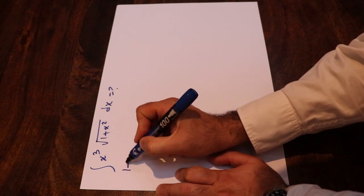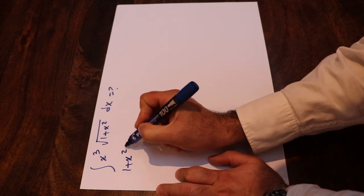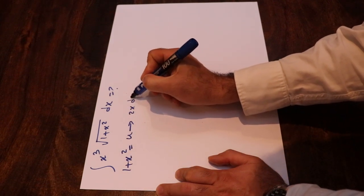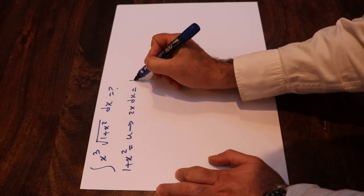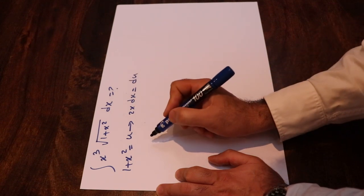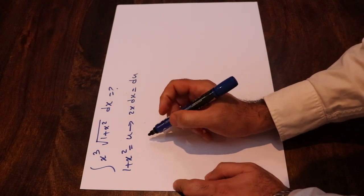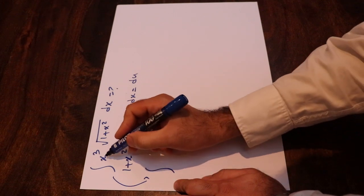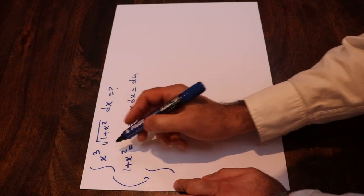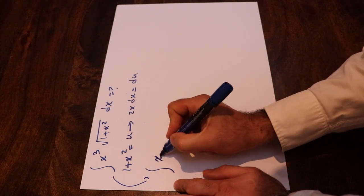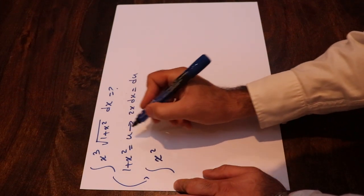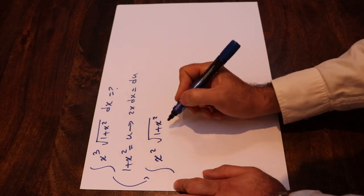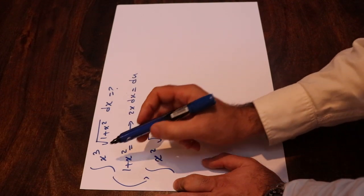If we define u = 1 + x², therefore 2x dx will be equal to du. So now you can rewrite this integral as x² times (1 + x²) times the square root of 1 + x².